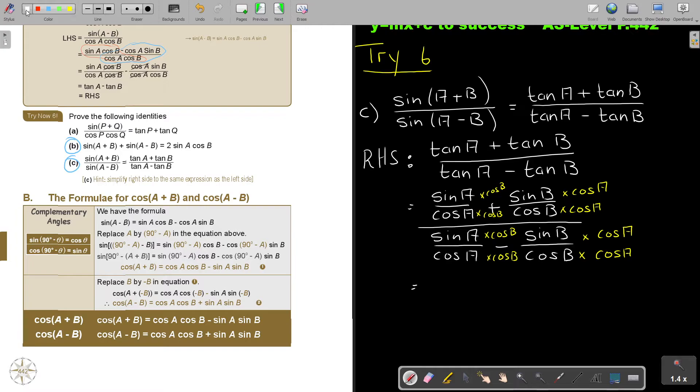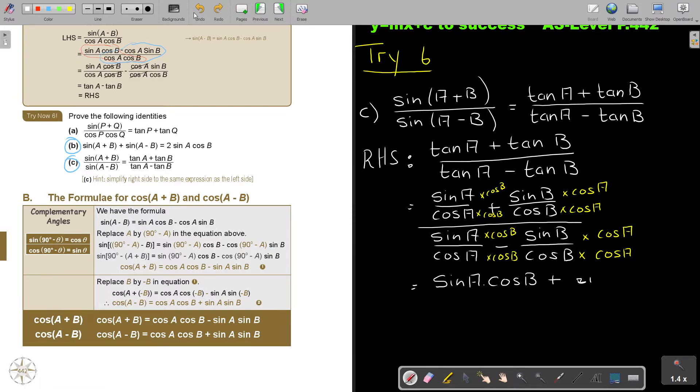Then I'm going to move up. Now, I'm going to make the denominators the same. Remember, what is my LCM? It's cos A cos B. So this one, I'm going to multiply with cos B over cos B. This one, I multiply with cos A. This one, I'm going to multiply with cos B on top cos B. And this one, I'm going to multiply with cos A and on top cos A.